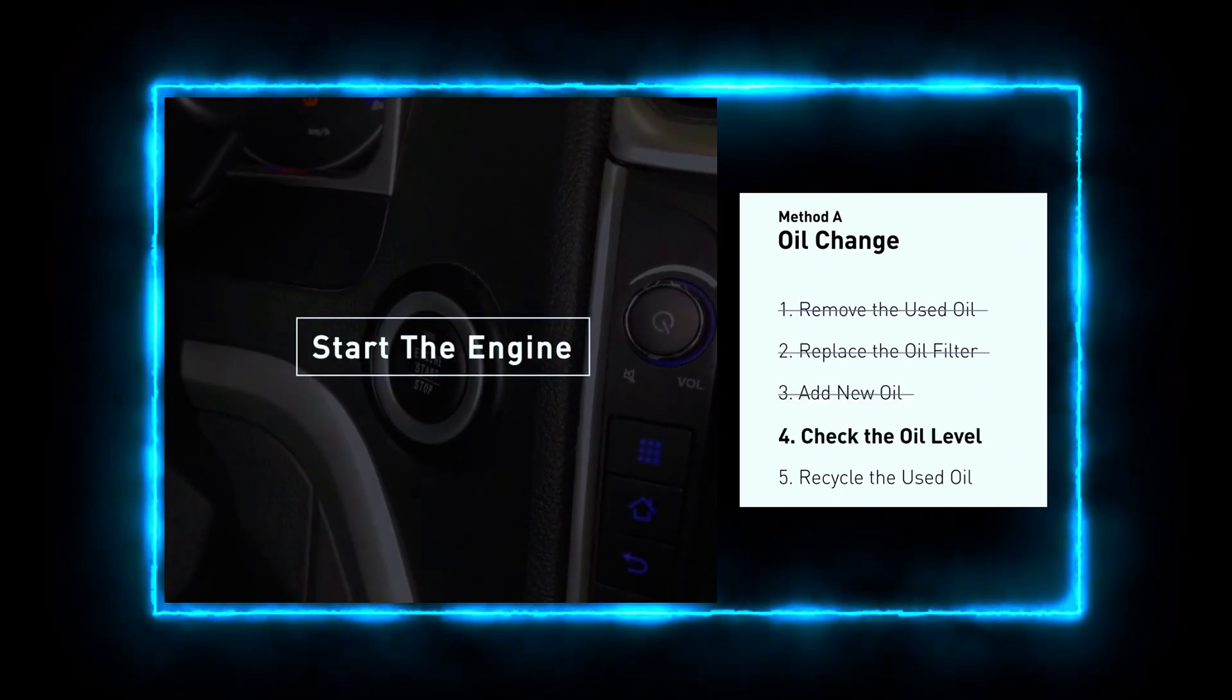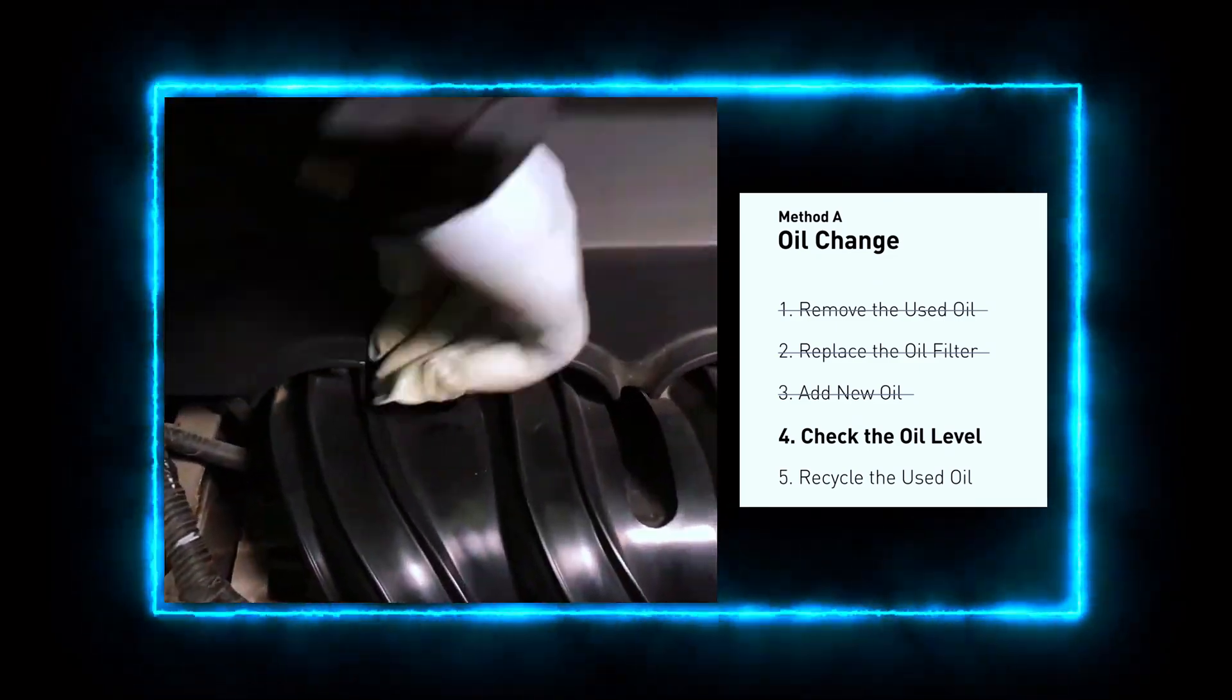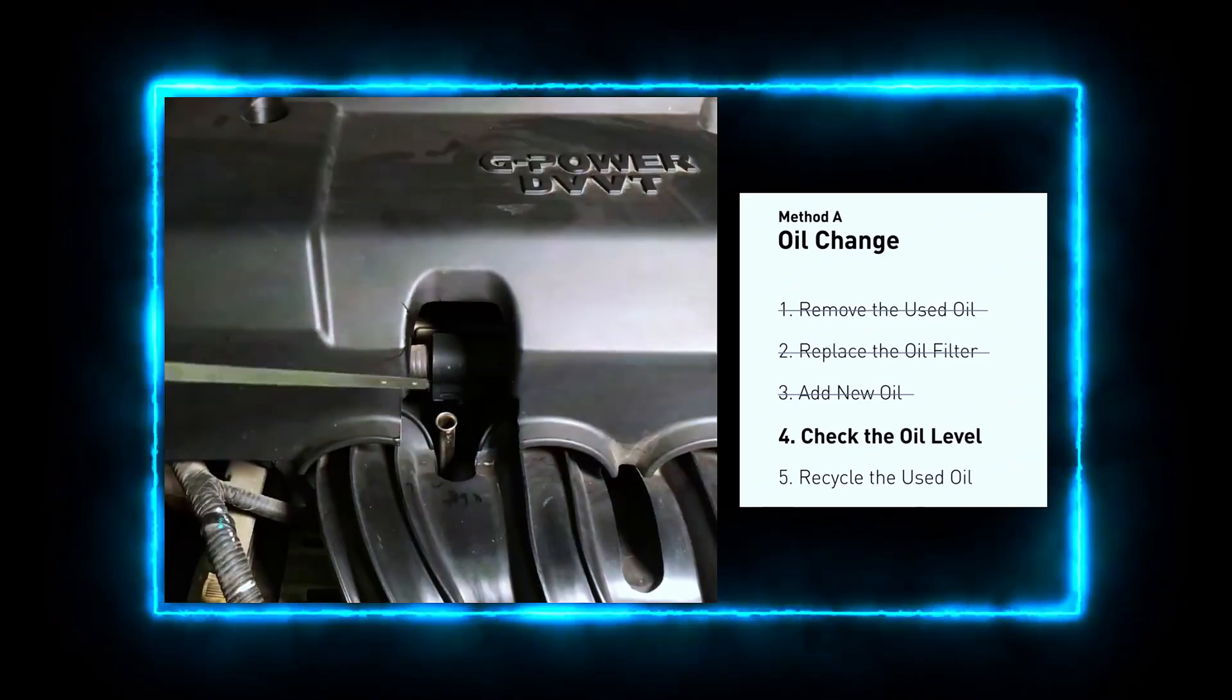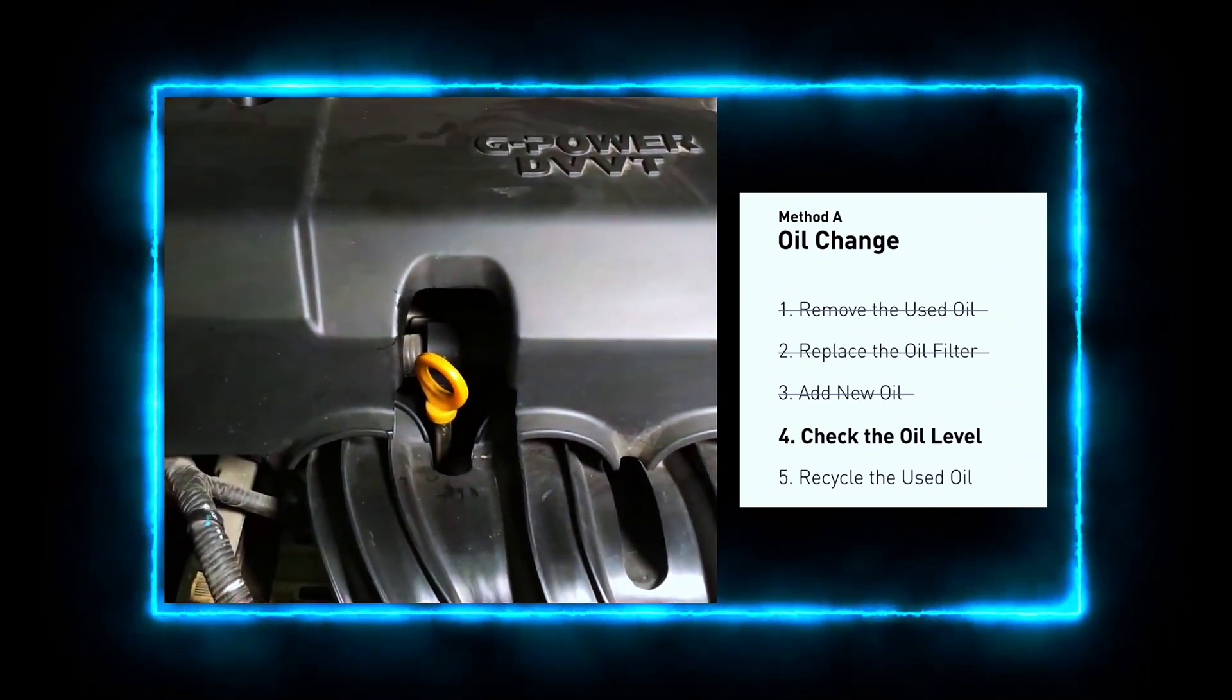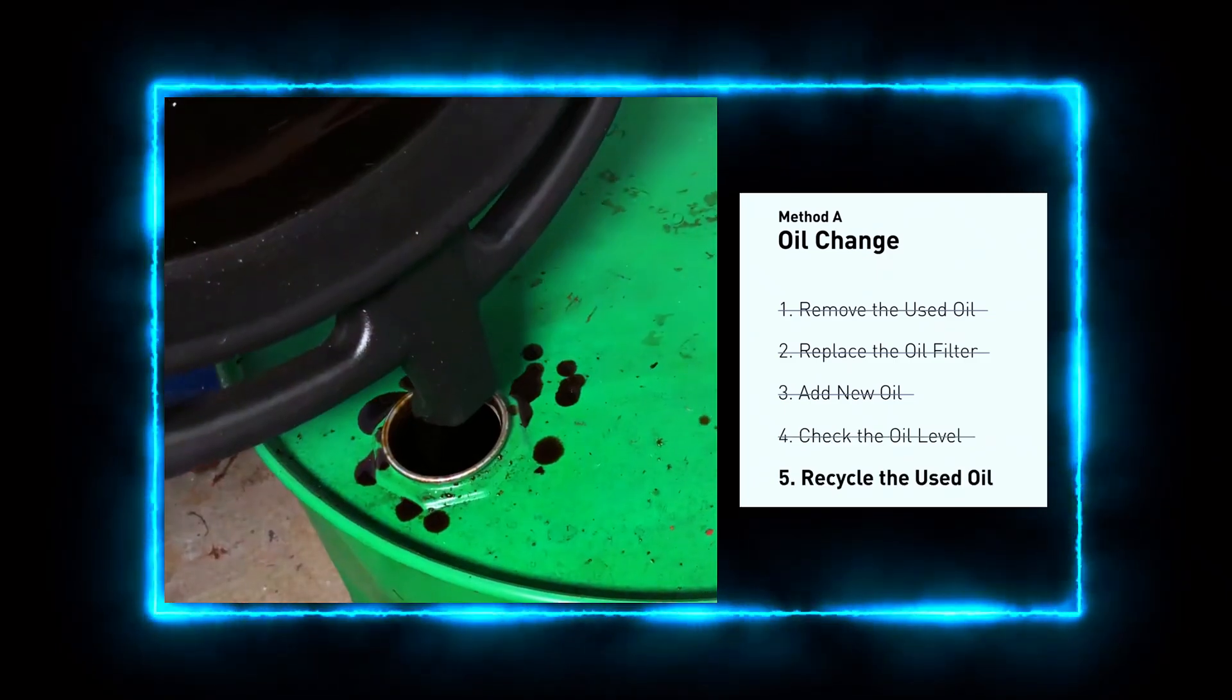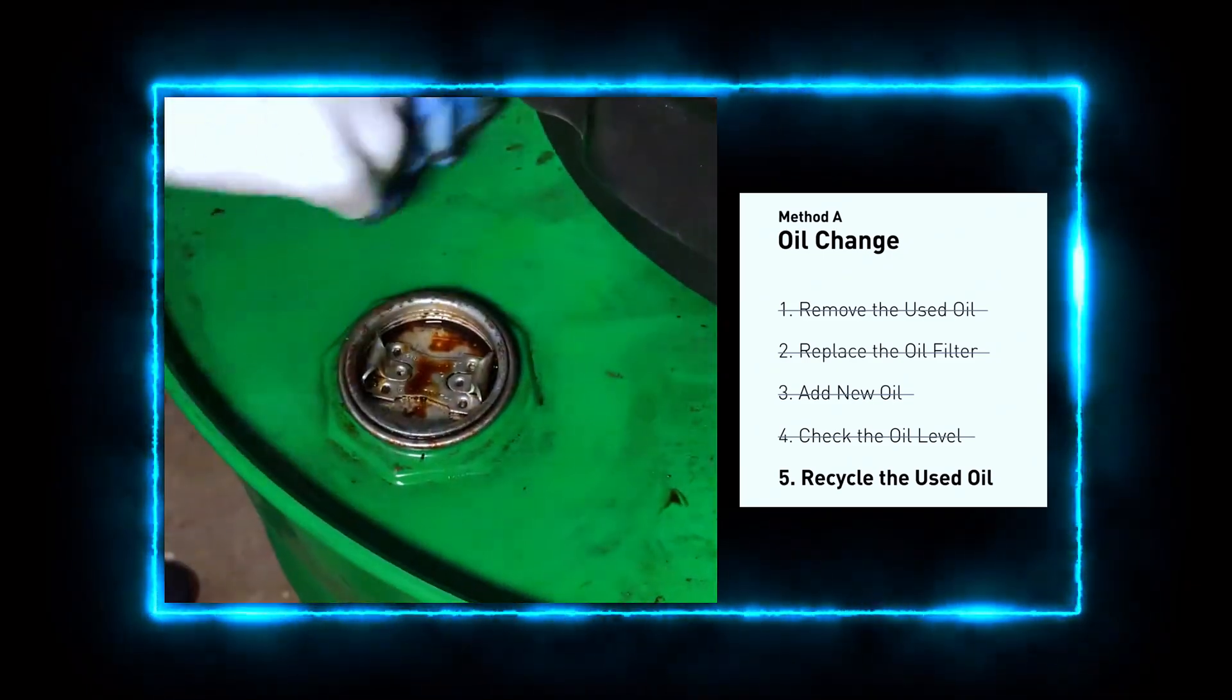Start your engine and let it run for a few minutes. Then turn it off and check the oil level using the dipstick. Add more oil if needed and recheck until you reach the correct level. Don't forget to dispose of the old oil properly. Most auto parts stores accept used oil for recycling. Never dump it in the trash or down the drain.